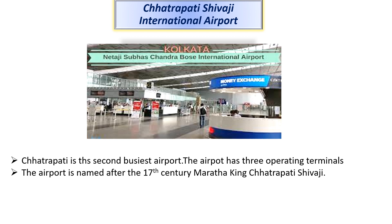As you can see on the screen, Chhatrapati Shivaji international airport is the 2nd busiest airport. The airport has 3 operating terminals and is named after the 17th century Maratha king Chhatrapati Shivaji.